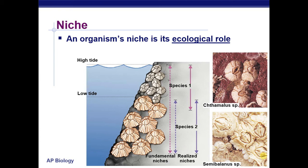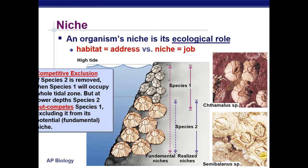One thing that's important to a community is that each organism has a role or each organism has a place. We call this a niche. A niche is an organism's ecological role. For example, its habitat is its specific living place, whereas its niche is kind of like its job.